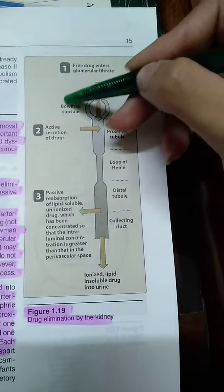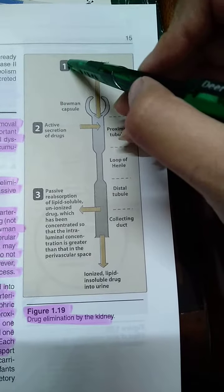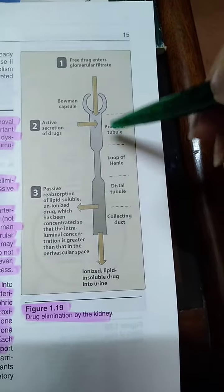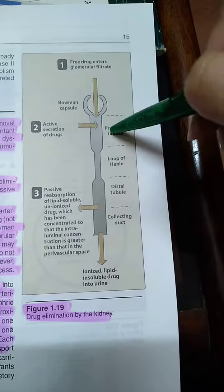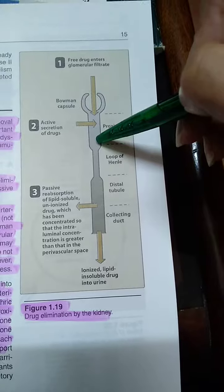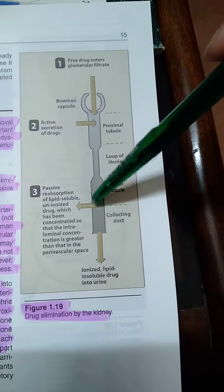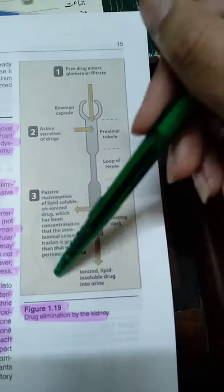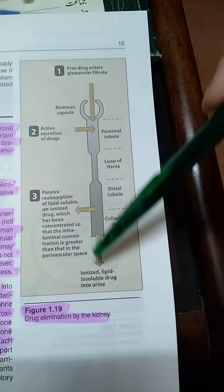First is the glomerular filtration phase. Second is the proximal tubule, which is the secretory phase — an active process, so active tubular secretion. Third is passive tubular reabsorption. And finally, urine and all the drug will be moved out.